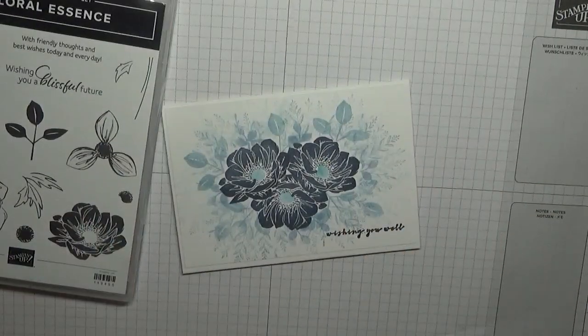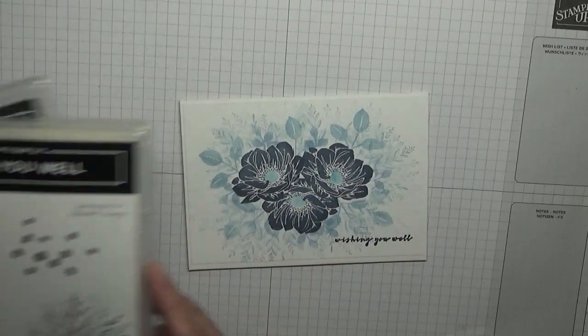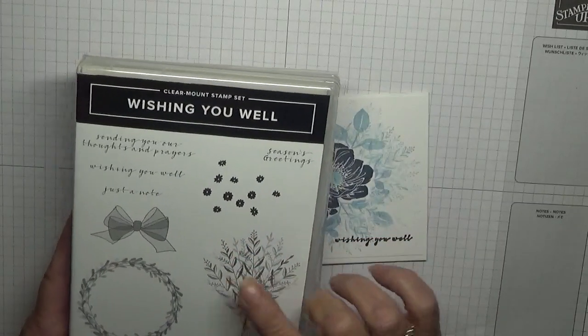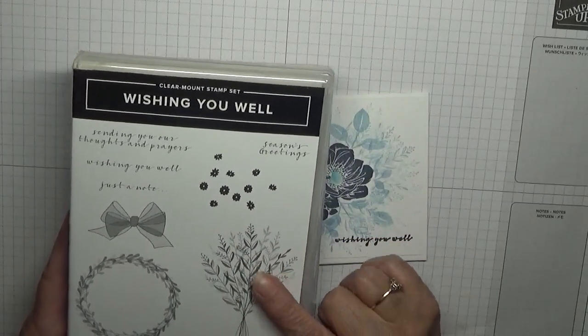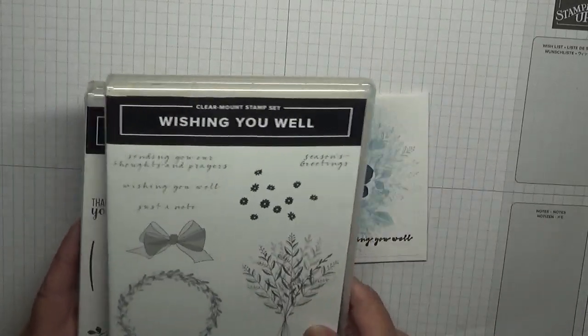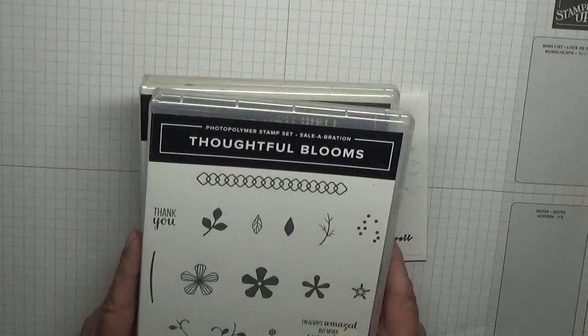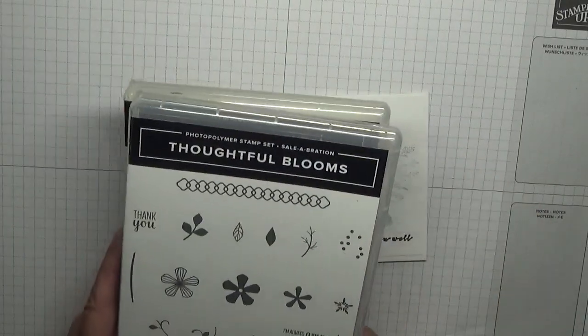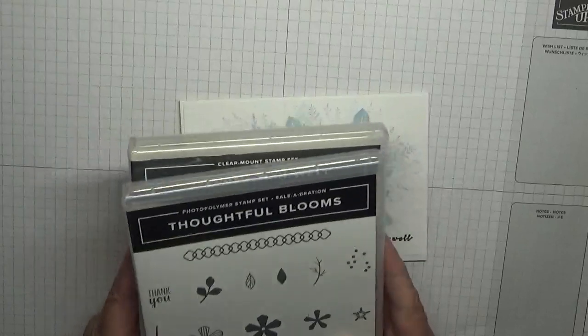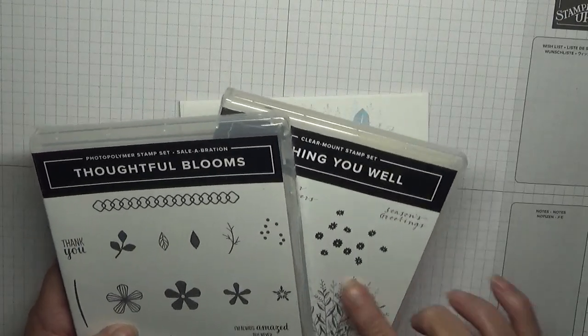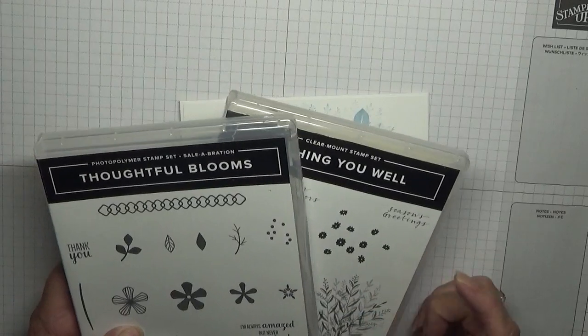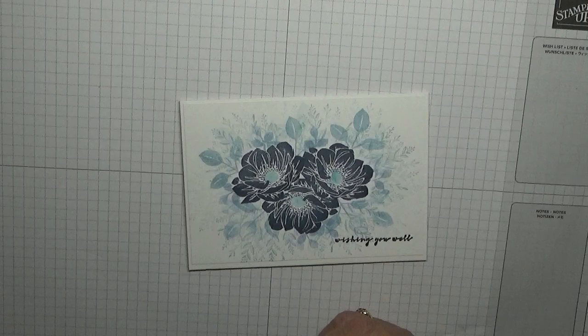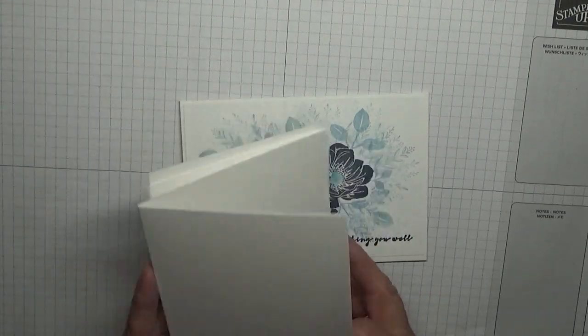I'm also going to be using two retired stamp sets. This one retired ages ago but I want to use this leafy background. That's Wishing You Well. Also Thoughtful Blooms. I'm just going to be using that leaf. I did try looking through stamp sets I've got that are current but I couldn't find anything like this or a tiny leaf.